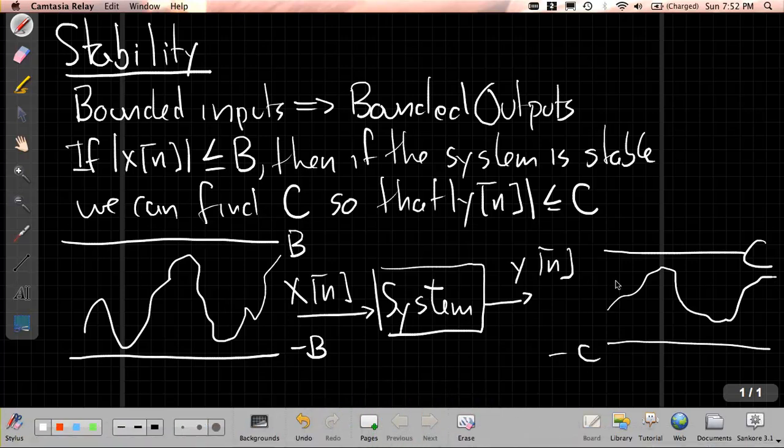So you can sort of think stability is about what's going on in the vertical axis. And if it's bounded, it says as long as I know the input stays within here, there has to be some limit on how big the output could get. It could get really big, but not infinite.